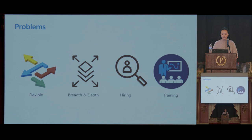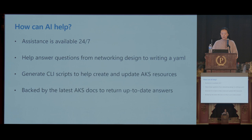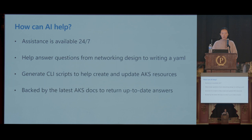So how can AI help with all of these problems? First, the AI assistant is available 24/7 — it can quickly answer any questions you may have, like a buddy to help you address any scenarios. It can help answer questions ranging from basic Kubernetes concepts to networking design to writing YAML to be more productive as a developer. It can also help you generate command line scripts to create and update AKS resources based on a set of scenarios and requirements. There's no need to dig through documentation or API specs. All of this is backed by the latest AKS docs to return up-to-date answers about new features and guidances.